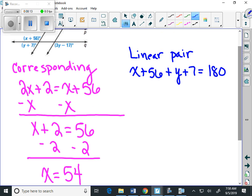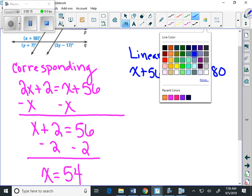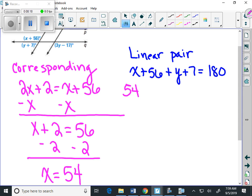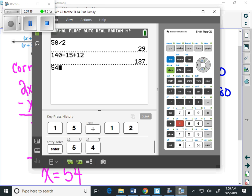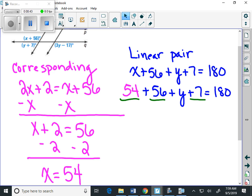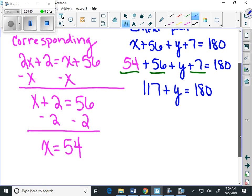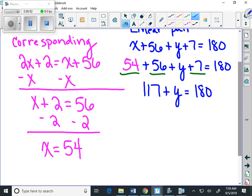We just found, moments ago, that x is 54. So we could fill that in. And then we've got plus the 56 plus the y plus 7. We can go ahead and add 80. And if we combine like terms, we've got 54 and 56 and 7. 54 plus 56 plus 7, which is 117. Plus y equals 180. And then finally, we can subtract 117 from both sides.